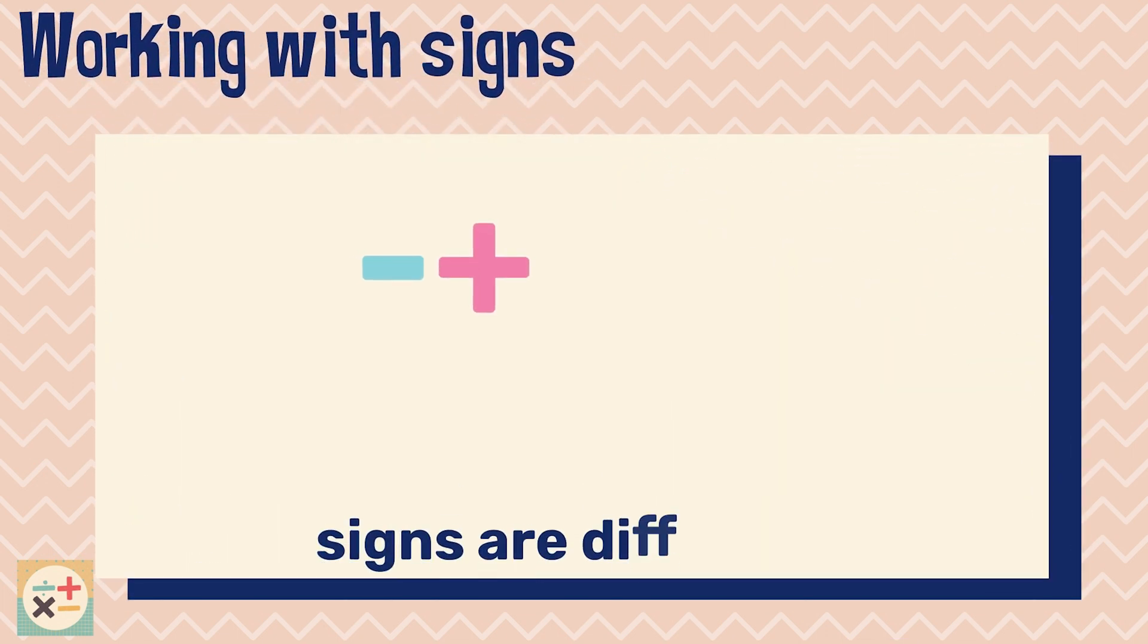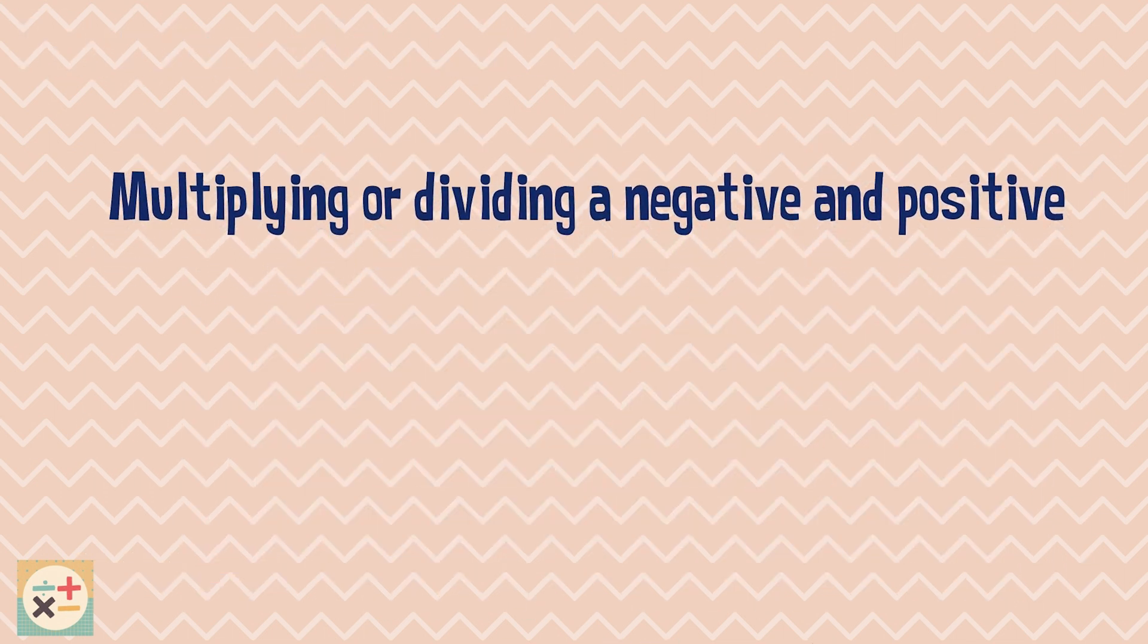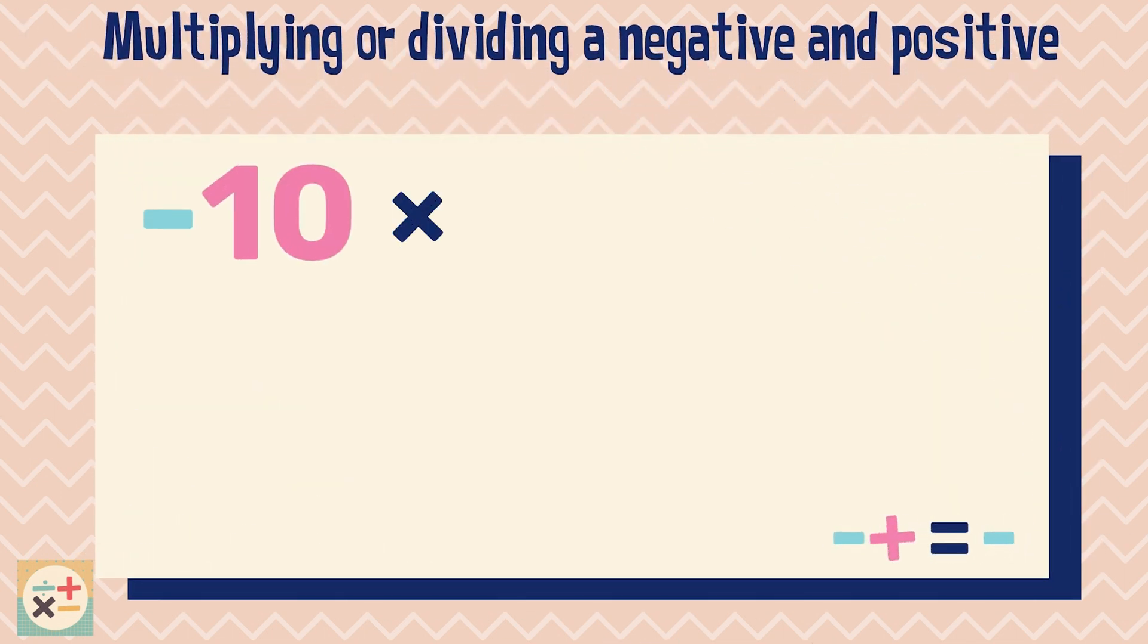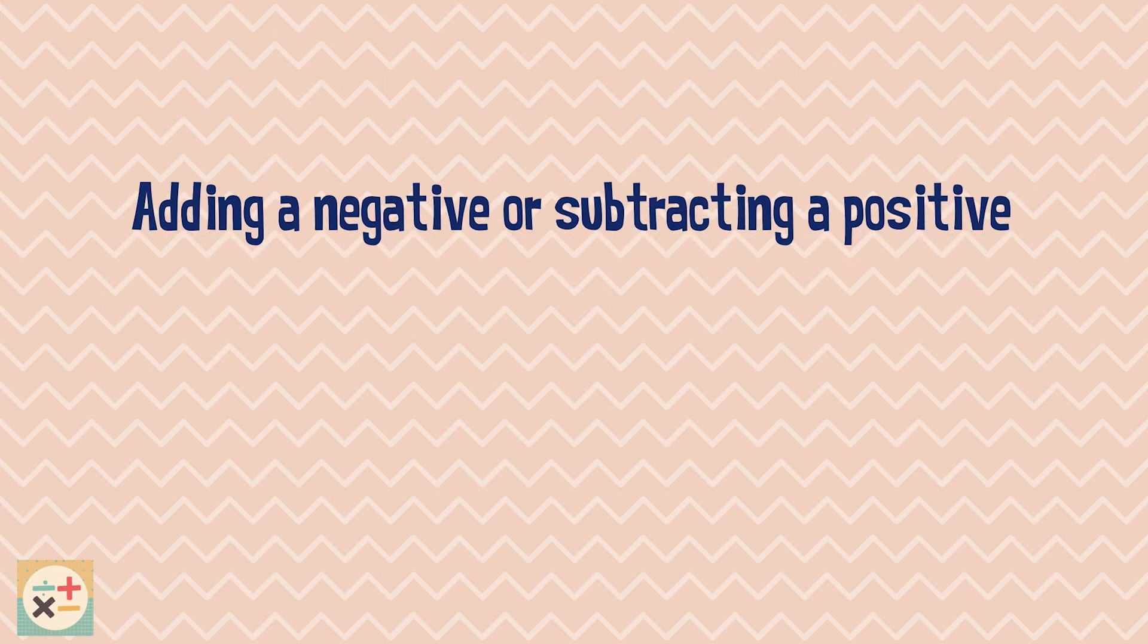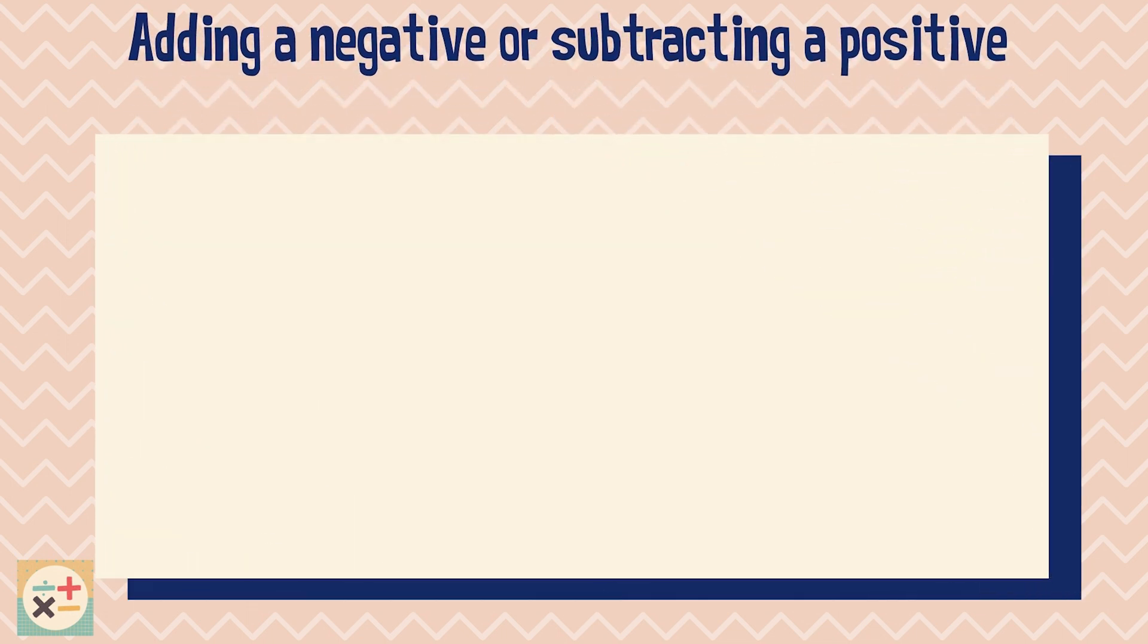When the signs are different, the results will be negative. If you are multiplying a negative and positive number together, the result will be negative. If you are adding a negative number or subtracting a positive number, you can change the signs to a subtraction.